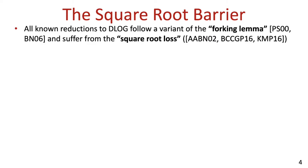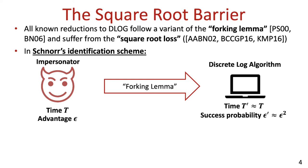Essentially, all reductions from the Schnorr ID and signature schemes to the D-log problem use some variant of the forking lemma introduced by Pointcheval and Stern, and later generalized by Bellare and Neven. This is a rewinding-based reduction technique that incurs a square root loss seemingly inherently. For example, this reduction technique can be used to convert an impersonator against Schnorr's ID scheme that runs in time t and has advantage epsilon into a D-log algorithm that runs in time roughly t as well, but has success probability which is roughly epsilon squared.